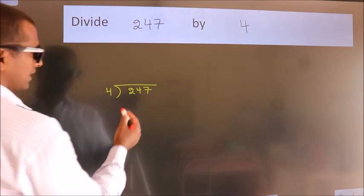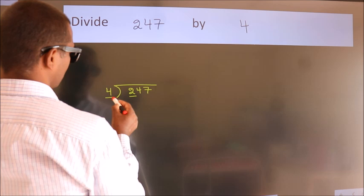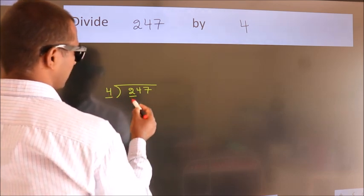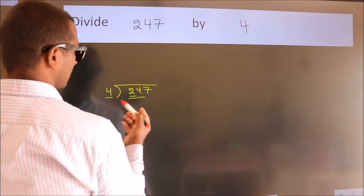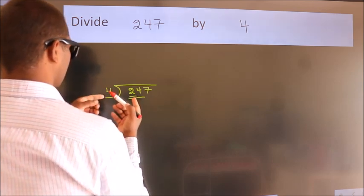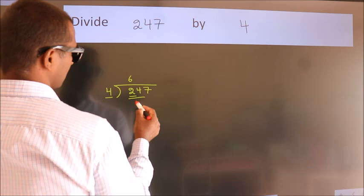Next. Here we have 2, here 4. 2 is smaller than 4. So we should take 2 numbers: 24. When do we get 24? In the fourth table. 4 times 6 equals 24.